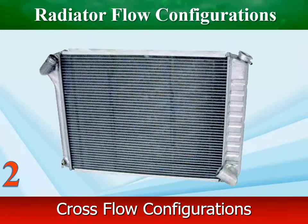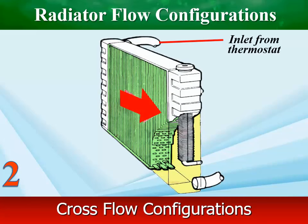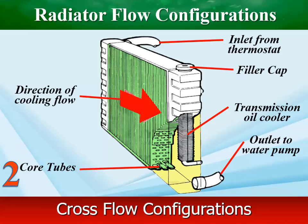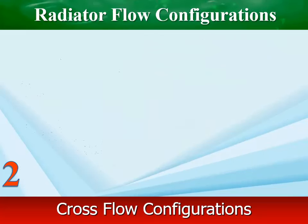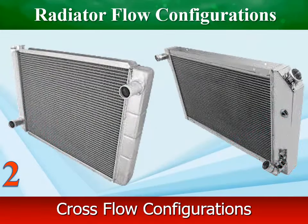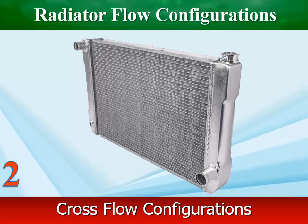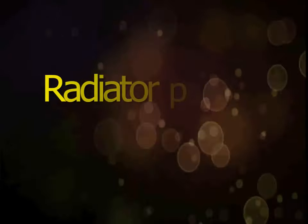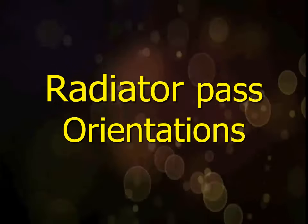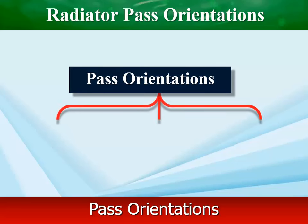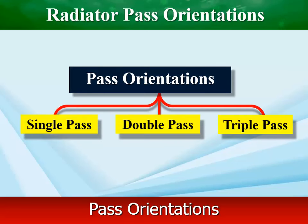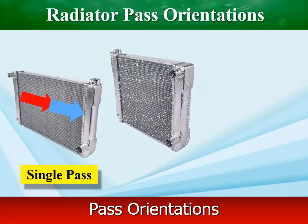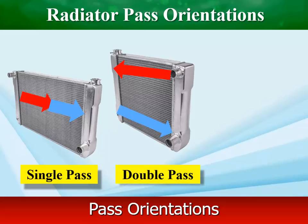Most radiators use a cross-flow design, where the tanks are mounted on the sides of the core, with coolant tubes running horizontally from one side of the radiator to the opposite side. This design allows the tubes to be longer, giving the coolant more time to exchange heat on each pass through the radiator. Cross-flow systems are also offered in single, double, or even triple-pass orientations, which allow the radiator to cool the fluid multiple times by separating the fluid to be cooled from that which has already been cooled.